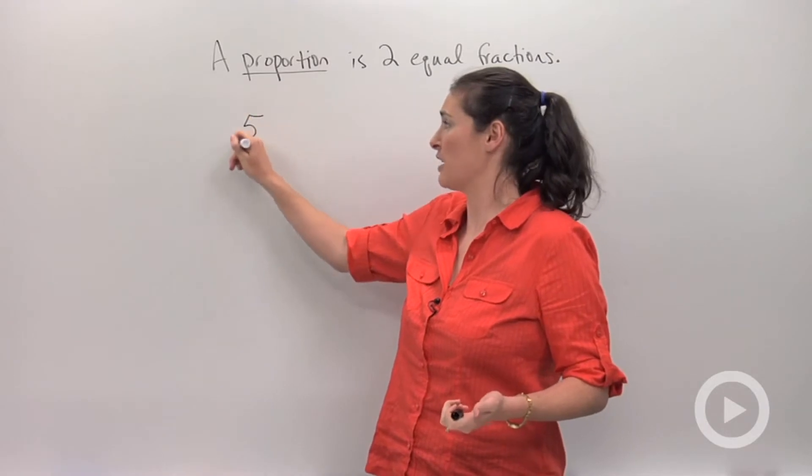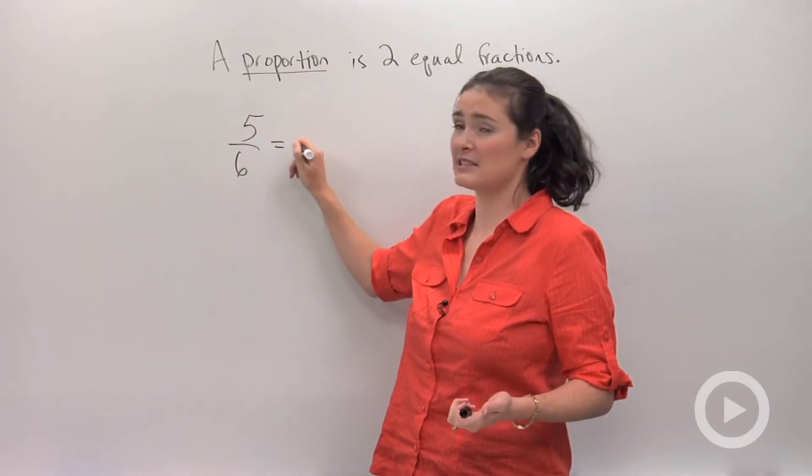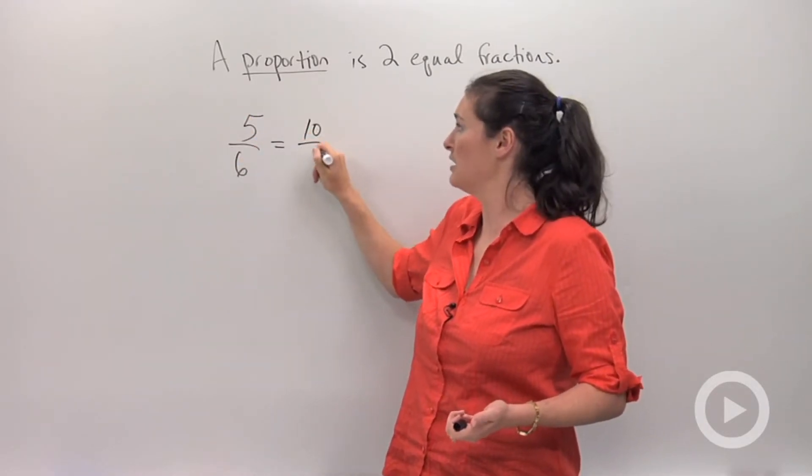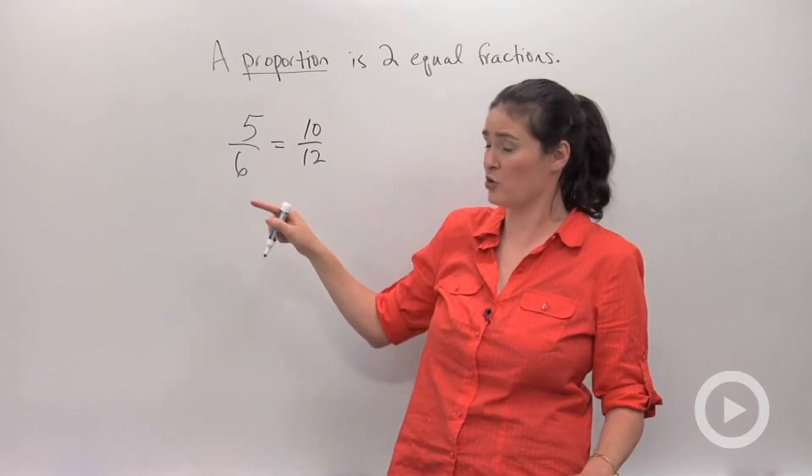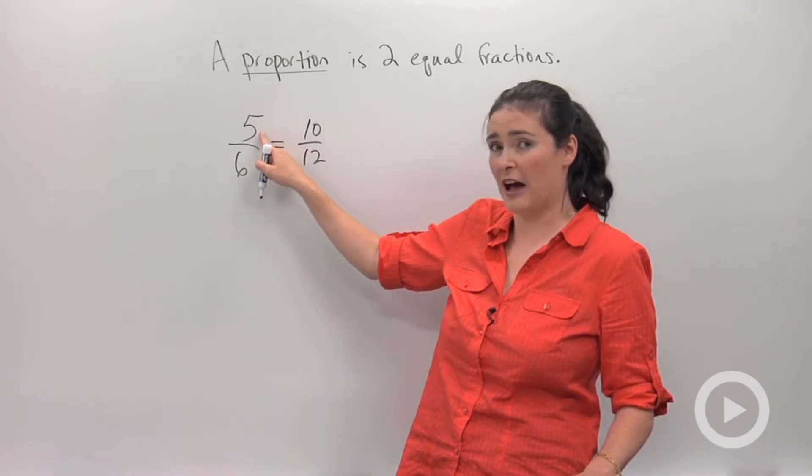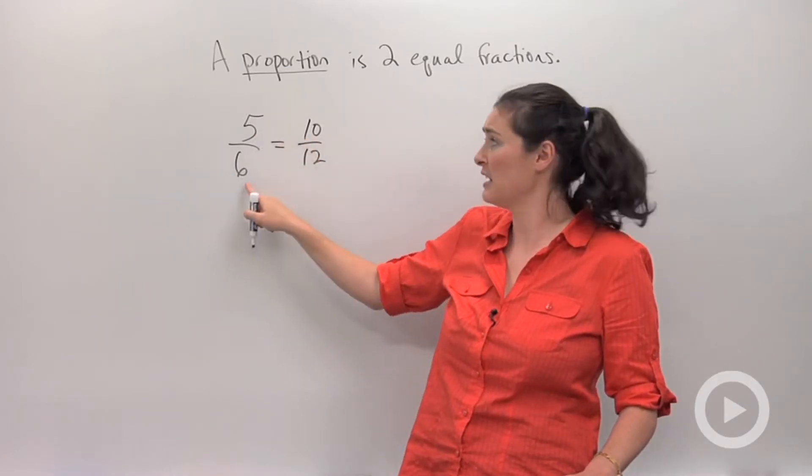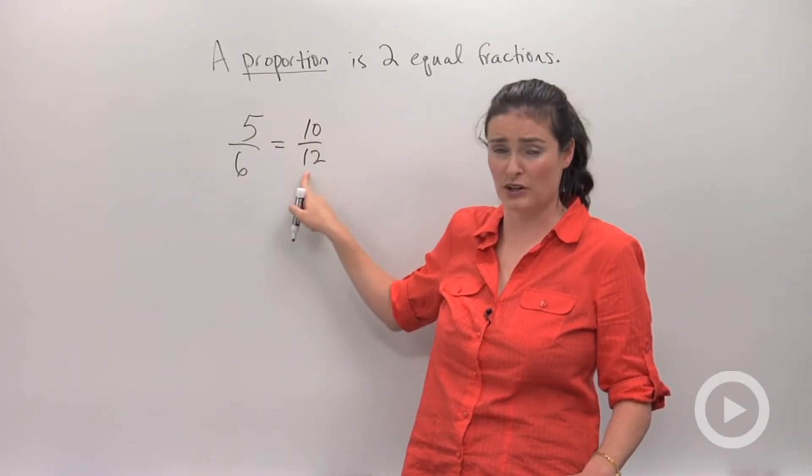For example, let's say I were to write 5 sixths is equal to 10 twelfths. You guys know those are equivalent fractions. In case you forgot, let me just remind you that I multiply 5 by 2 in order to get 10, and I multiply 6 by 2 in order to get 12.